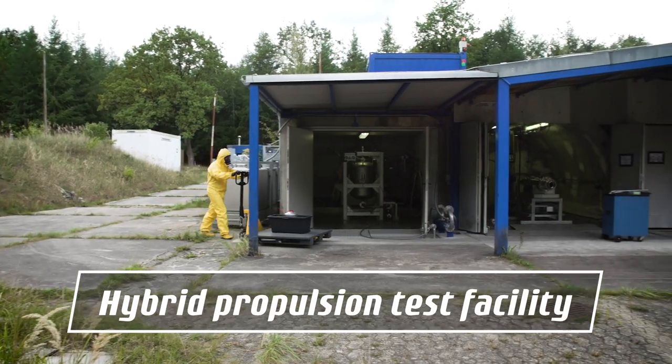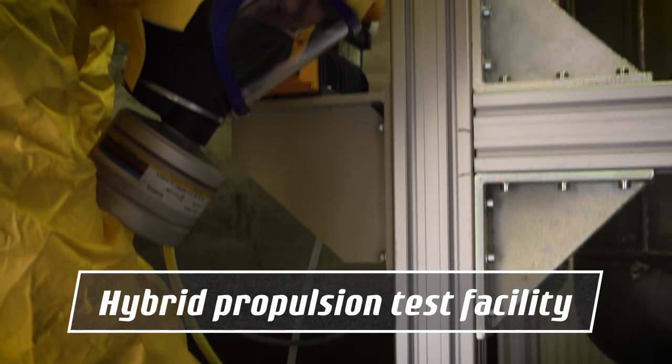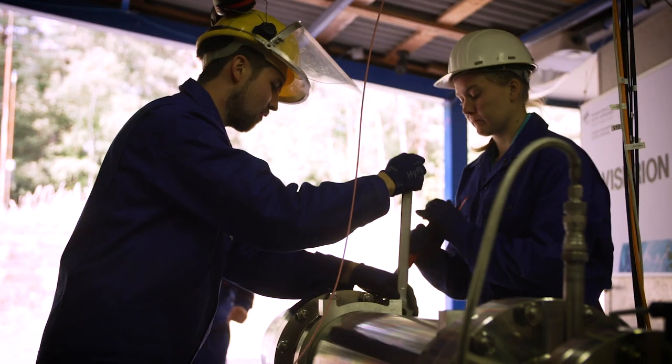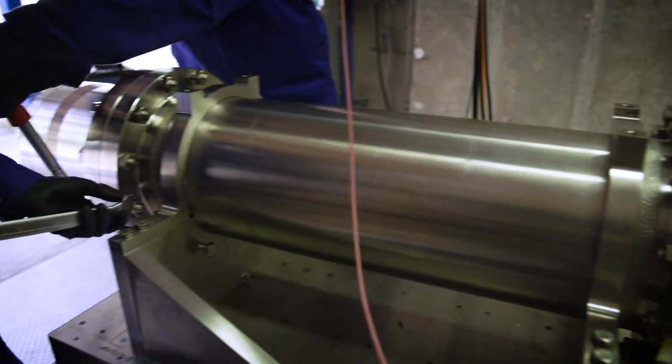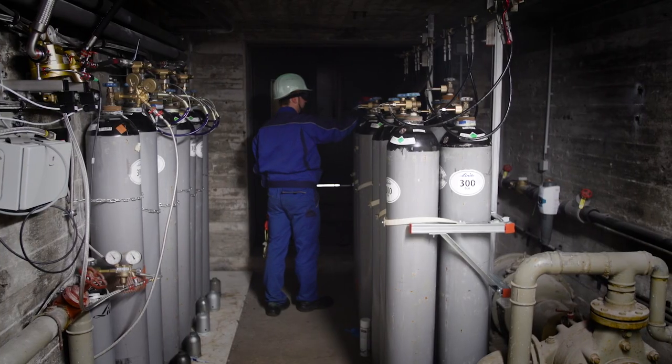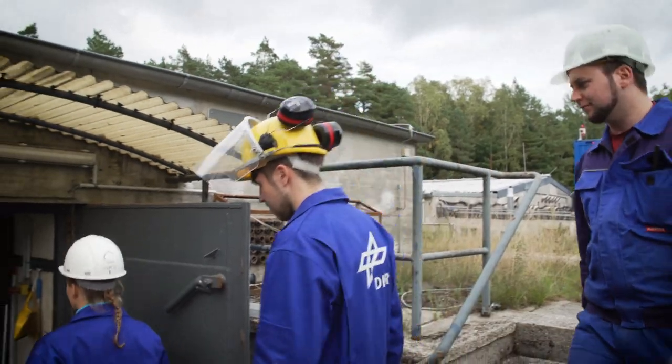Here we are at the hybrid rocket engine test facility. Here we can test hybrid rocket engines with oxidizer mass flow up to 8 kg per second for a time of up to 30 seconds. In recent years we have achieved a complete or nearly complete fuel consumption and therefore we have increased efficiency of engines.